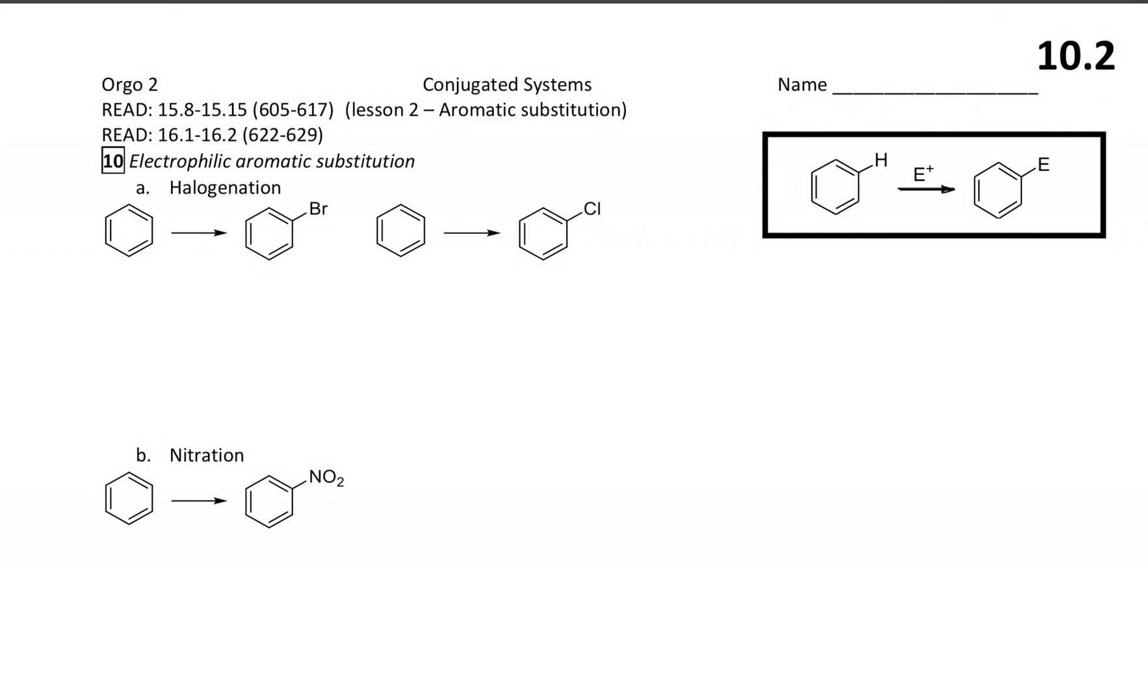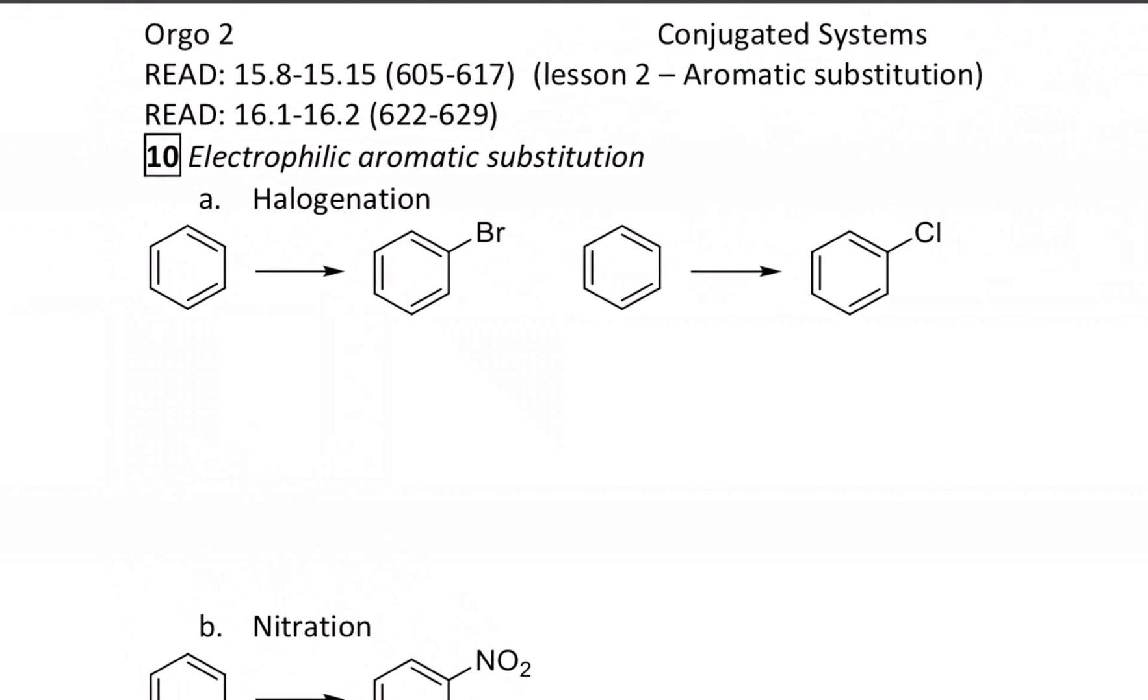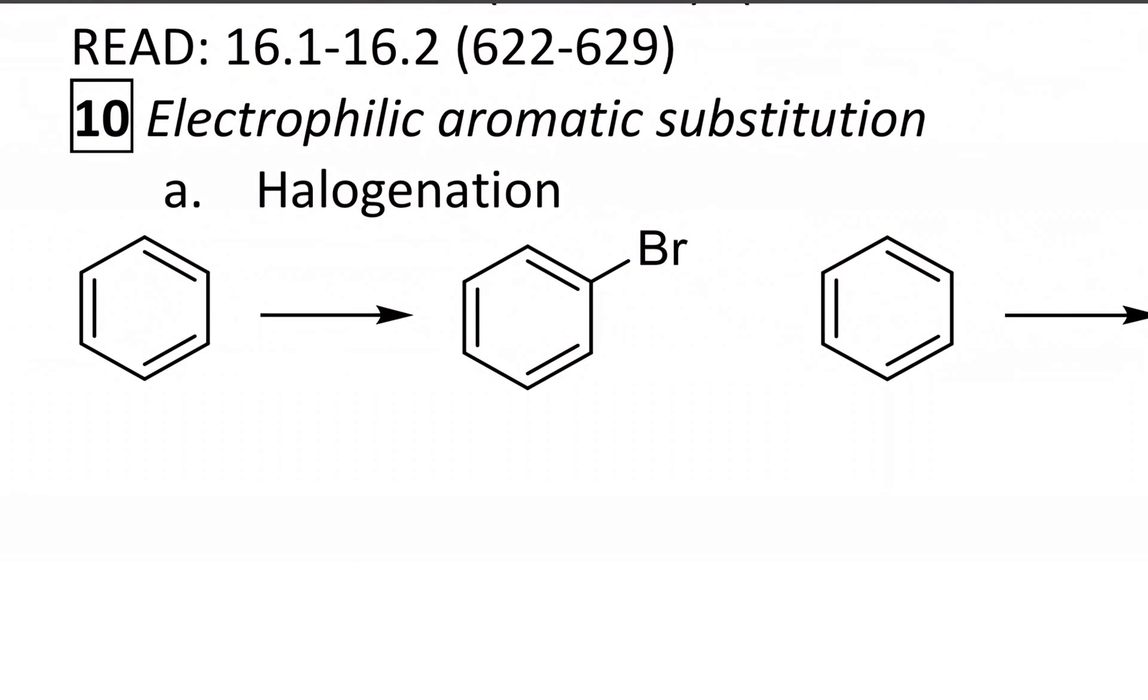Today we'll look at how chemists change aromatic rings into substituted aromatic rings, and this is very useful in the drug development industry and all sorts of applications employ this chemistry. They're all electrophilic substitutions, and we'll start off with how to attach a halogen like bromine to the ring.